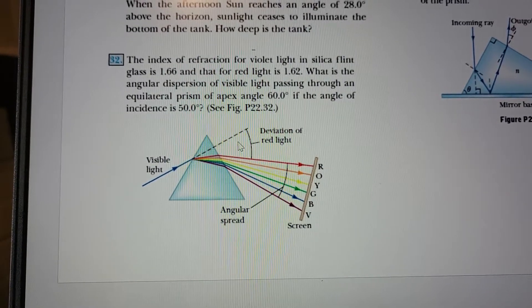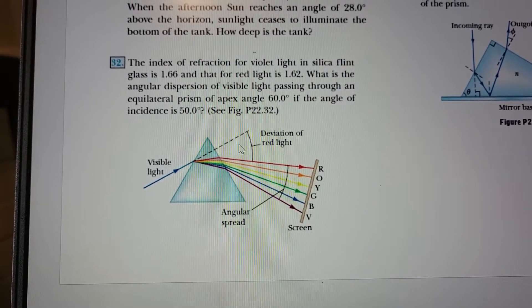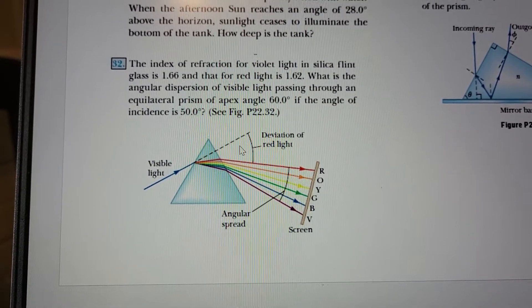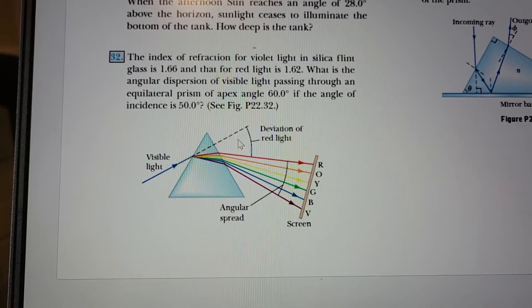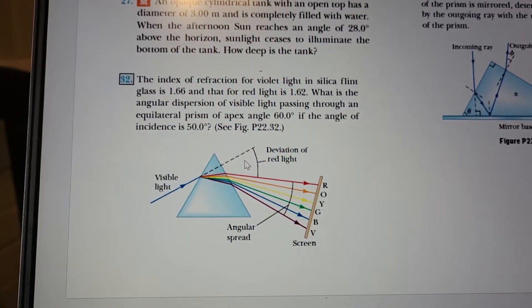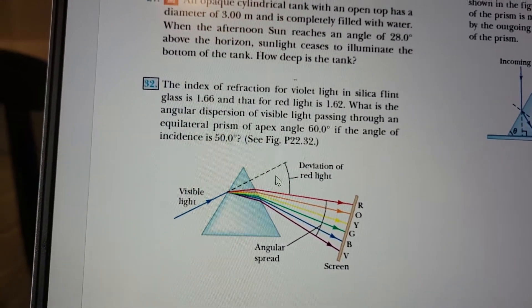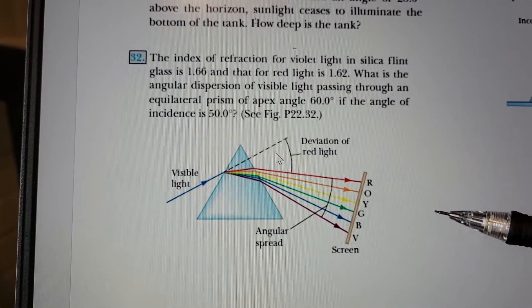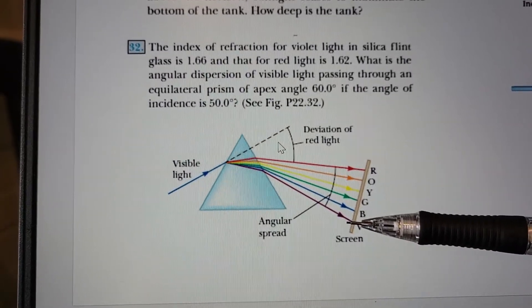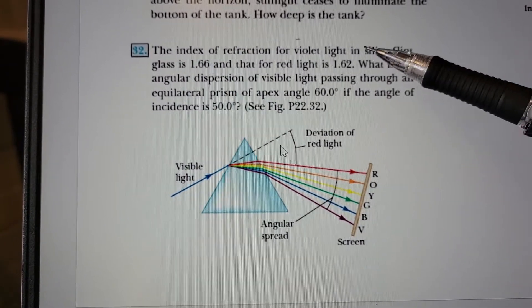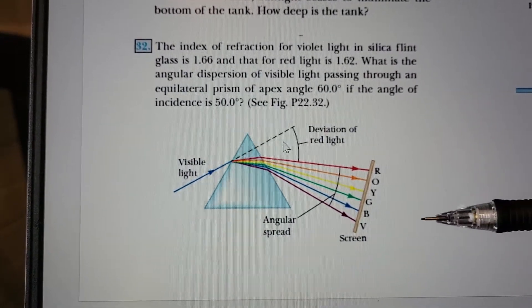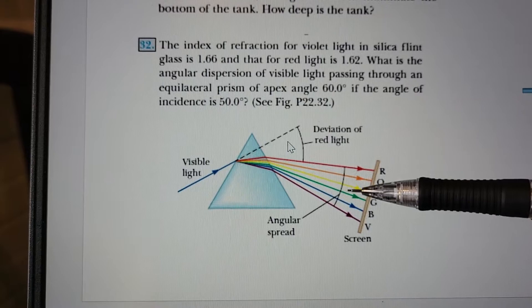What's the angular dispersion of visible light passing through an equilateral prism of apex angle 60 degrees if the angle of incidence is 50 degrees? So what they're asking for is the angle that the red and the violet make. That's why they gave us the index of refraction for red light and for violet light, because they want us to find this angle here.